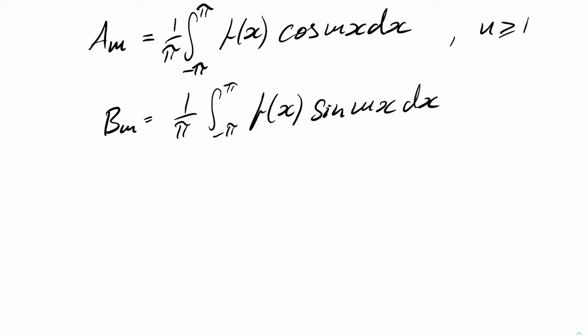You can go through exactly the same argument with a sine to find that the b_m is one over pi times the integral from minus pi to pi of f of x times sine mx dx. You can also figure out that a zero is just the integral of the function over one period divided by pi. So it's two times the average. So let's see how this is going to work in practice.